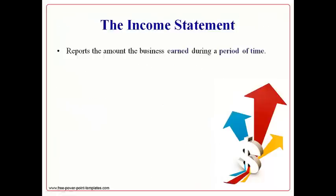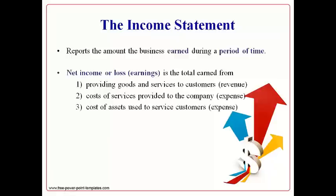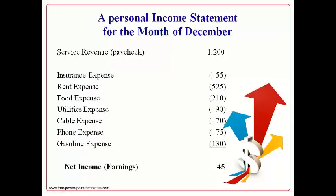The income statement reports the earnings of the business over a certain period of time. Earnings is the net result of revenues from providing goods or services to customers, the cost of these services provided to the company, and the cost of using assets to serve customers. Companies typically report earnings for a period of a month, a quarter, or a year. The revenue for the month represents service provided in exchange for payment. The cost of living during the month are reported as expenses. The earnings is the result of revenue less expenses. Different names are used to describe the cost of operating the business.